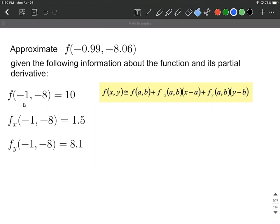We know that if you plug in negative one, negative eight, we get 10 out. The partial derivative with respect to x at negative one, negative eight is 1.5, and the partial derivative with respect to y is 8.1.